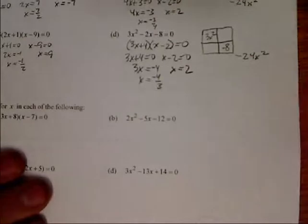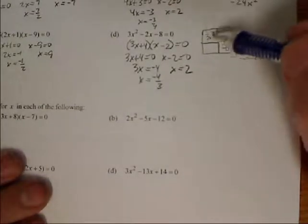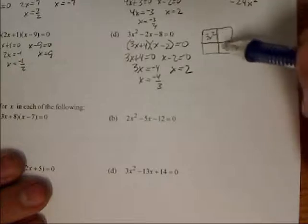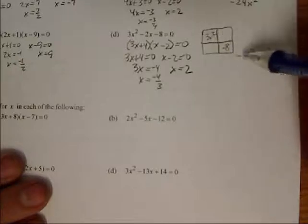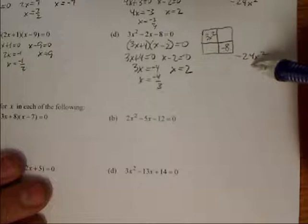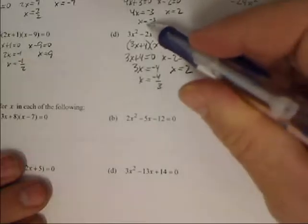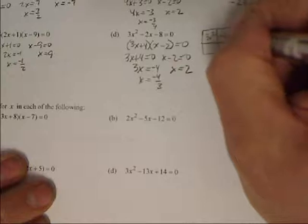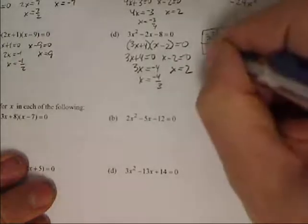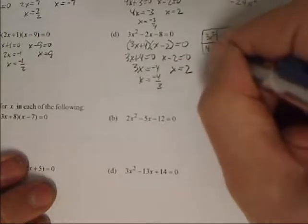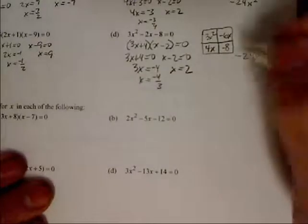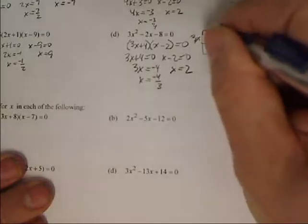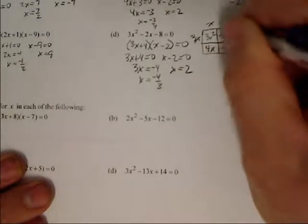On this other one, again, multiplying. I put 3x squared into the upper corner here, negative 8 down here, gives me negative 24x squared. So two numbers that multiply to give me negative 24, but add to give me negative 2. So that would be negative 6x and 4x. Again, one's positive, one's negative, because last sign's negative. Factor out, I could factor out a 3x, 3x times x, 3x times negative 2, there's my x minus 2.